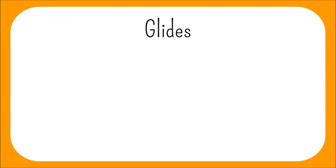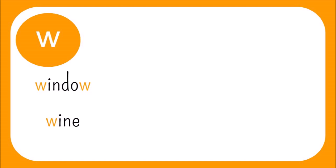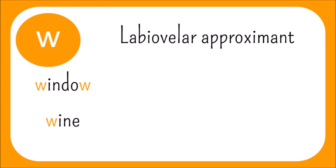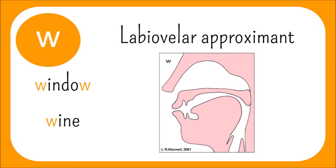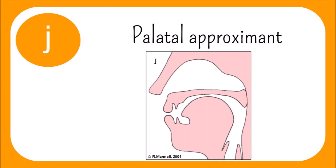English has two glides, W and Y. They are called glides because the position of articulation glides from one place to another. They are also known as semi-vowels. W, found in words like window and wine, is a labiovelar approximant, and is articulated by rounding the lips and raising the back part of the tongue towards the soft palate. It is voiced, meaning its articulation results in vibration at the front of the throat. Y is a sound that is written using the English letter J in IPA. It is palatal, meaning the middle of the tongue is raised to meet the hard palate, and is also voiced.